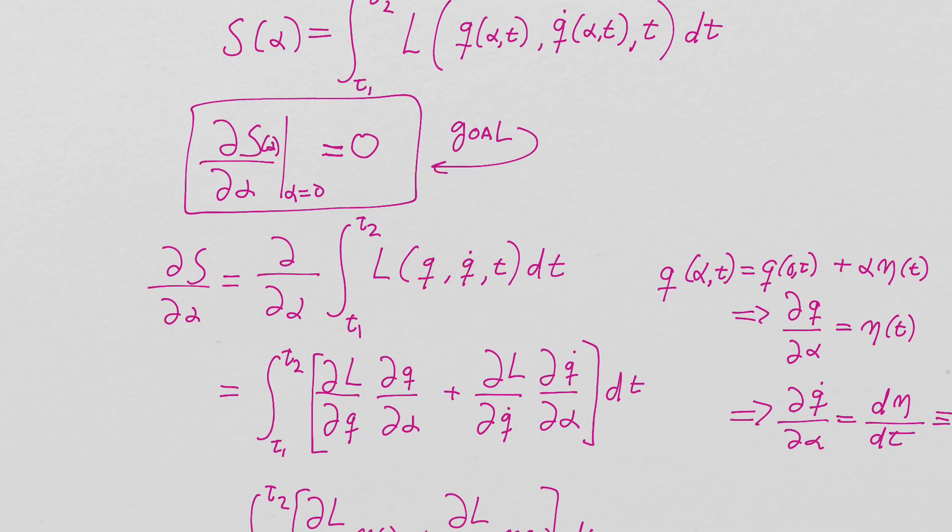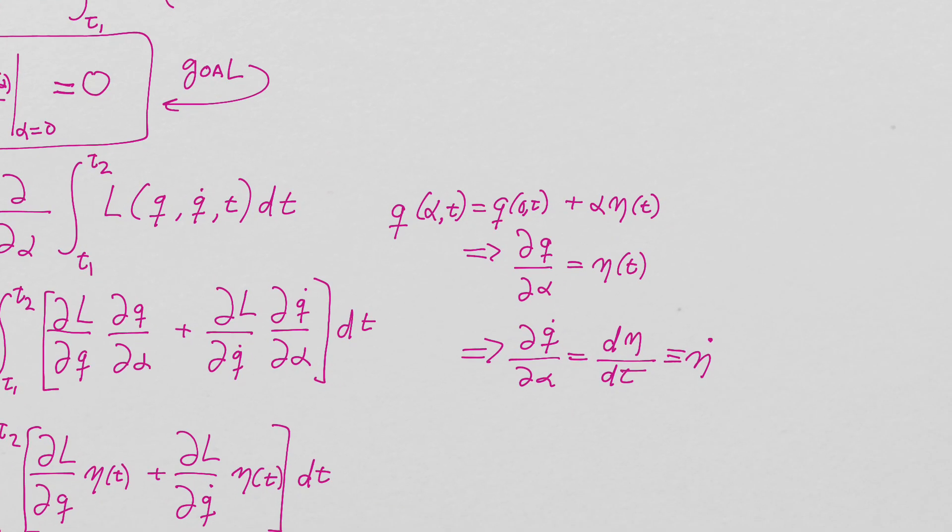So calculating this derivative. Now to make things worse, I'm getting rid of the functional dependence on alpha and t, but you have to understand there is a functional dependence of alpha and t in q, and L has an implicit functional dependence on alpha and t, because I don't want to carry around these arguments everywhere, it gets to be a mess.